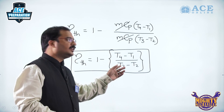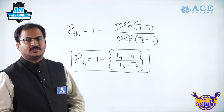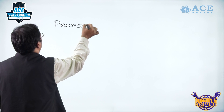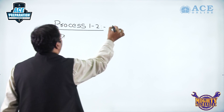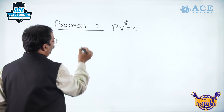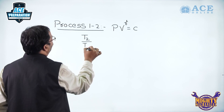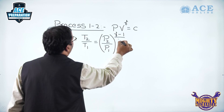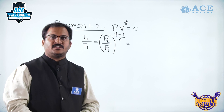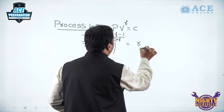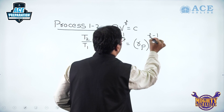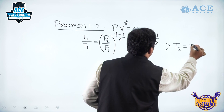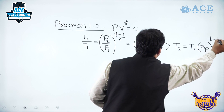To get the thermal efficiency in terms of the pressure ratio, we need to express the temperatures using the isentropic process relations. For process 1 to 2, which is isentropic compression with PV^γ = constant, we get T2/T1 = (P2/P1)^((γ-1)/γ), and P2/P1 is nothing but the pressure ratio R_P. Therefore T2 = T1 × R_P^((γ-1)/γ).